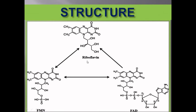Riboflavin is the inactive form, and from it two active forms are produced: FMN and FAD. Both FMN and FAD function as coenzymes in redox reactions. That means oxidoreductase enzymes perform their function using these as coenzymes.